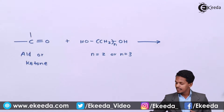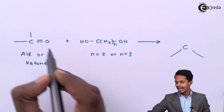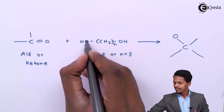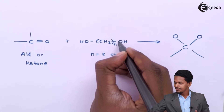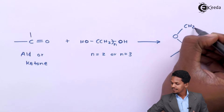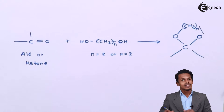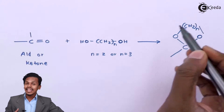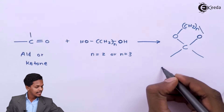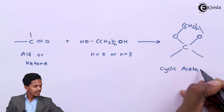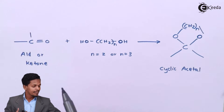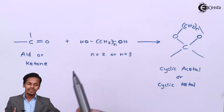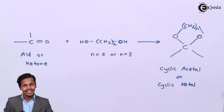The product formed has a carbon with its two valencies fulfilled by the two oxygen atoms, with the middle -(CH2)n- chain connecting them, forming a cyclic ring. This product can be called a cyclic acetal if an aldehyde reacted with the diol, or a cyclic ketal if a ketone reacted with the diol.